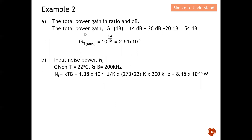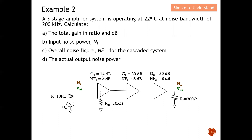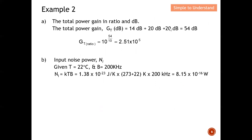To compute the total gain in decibel, we add all the individual stages. We have 14 dB, 20 dB, and 20 dB, so the total power gain is simply 14 + 20 + 20 = 54 dB. The question also requires the ratio, so we convert 54 dB to ratio, which gives a total power gain of 2.51 × 10⁵ in ratio.